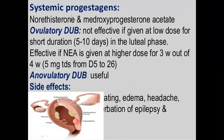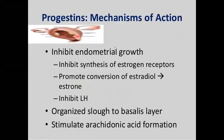The systemic progestogens used for AUB are norethisterone acetate and medroxyprogesterone acetate; these are effective in ovulatory DUB. Side effects are nausea, vomiting, headache, water retention, and in epilepsy there will be exacerbation of attacks. The mechanism of action of progestogens is very important: they inhibit endometrial growth by inhibiting the synthesis of estrogen receptors, promote conversion of estradiol to estrone (a weak estrogen), and inhibit LH. By these three mechanisms, progestogens inhibit endometrial growth.